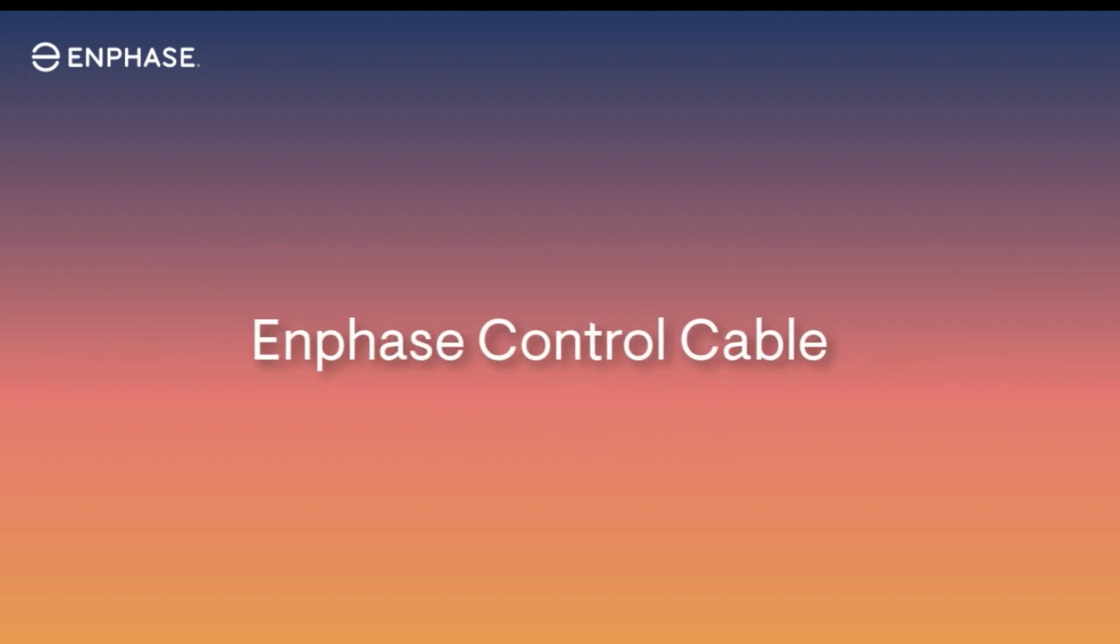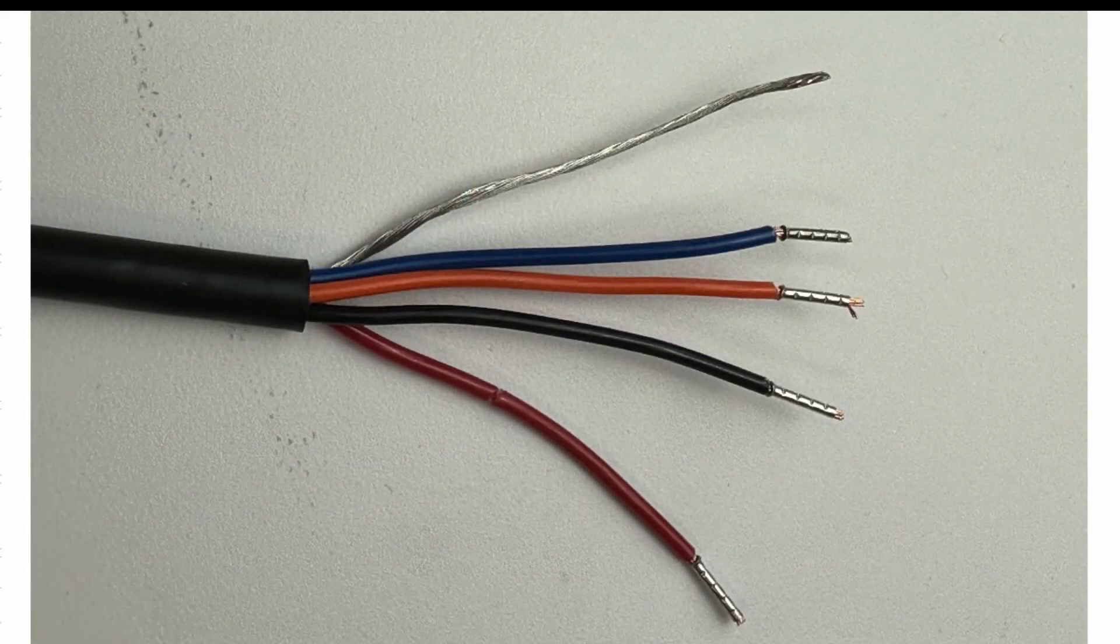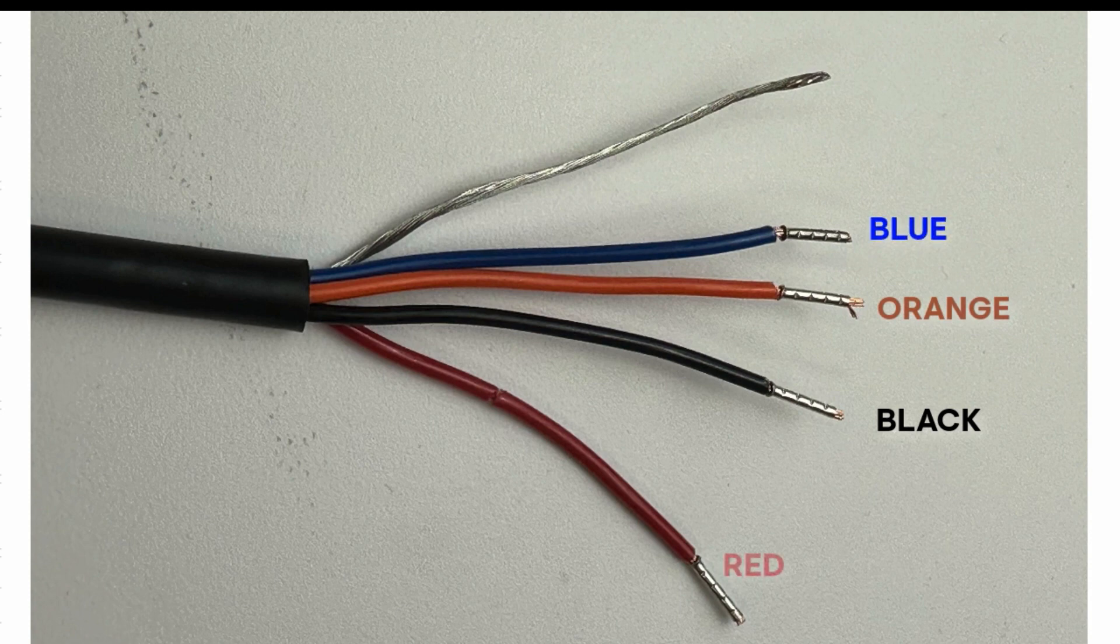The Enphase control cable is a UL listed cable and is the only approved cable for use in Enphase systems. It's a four conductor cable. The conductors are black, orange, blue and red and the shield of the cable is called the drain wire.